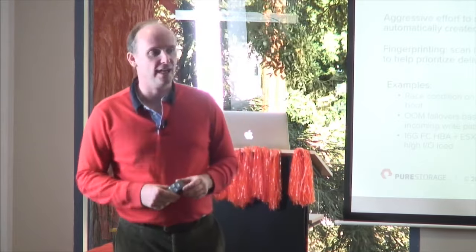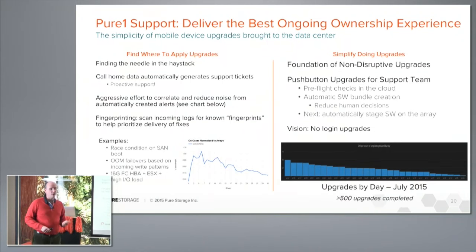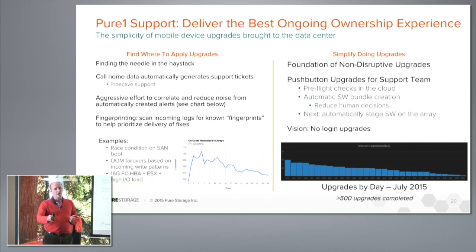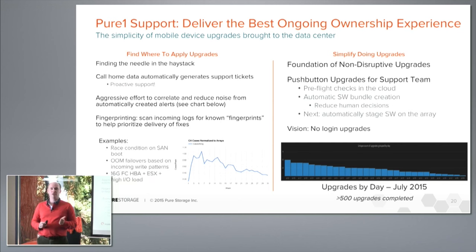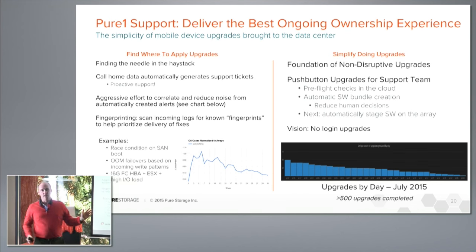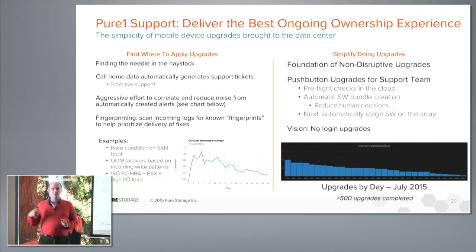The second thing we do is we've built something that we refer to as a fingerprint engine. Fingerprints are essentially classifications where we know we've discovered some defect in our system, and we've programmatically captured that. We can process the incoming log stream that we get back from the arrays to see if you're susceptible to a certain fingerprint. A lot of the defects we have in our system are very nuanced and obscure — you really have to do, say, 10 steps in a process to hit a defect. If you're eight steps of the way through that 10-step process, we want to find and update your software before you ever hit the defect.